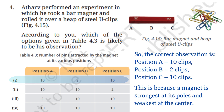Atharv observed that the maximum number of steel clips got attached to the two ends of the bar magnet — the north pole at position A and the south pole at position C — with only a few clips at the middle, position B. This is because a magnet is strongest at its poles and weakest at the center. The correct observation is: position A — 10 clips, position B — 2 clips, position C — 10 clips.